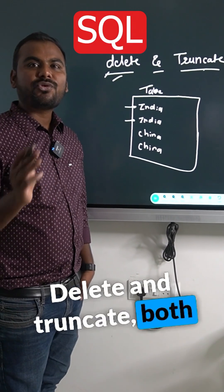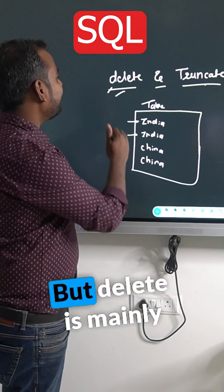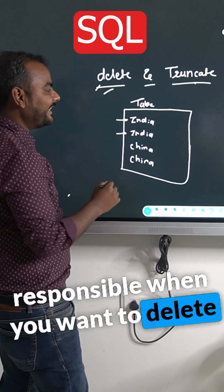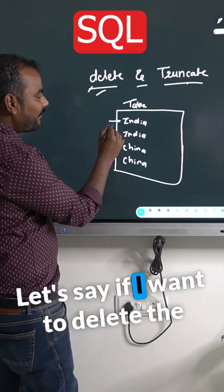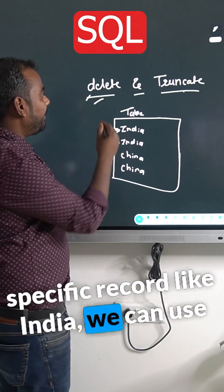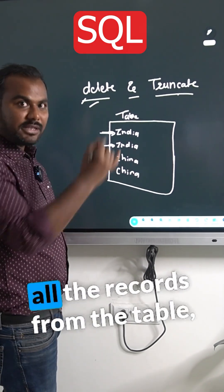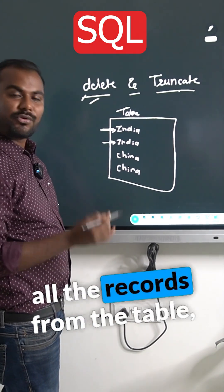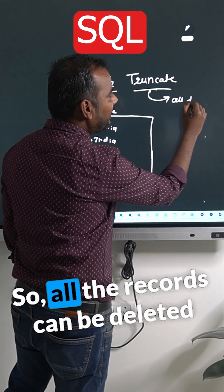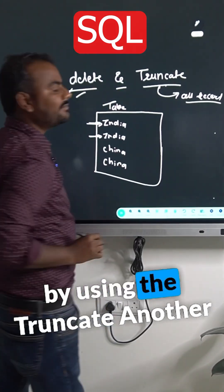Delete and truncate both are responsible to delete the record from the table, but delete is mainly responsible when you want to delete a specific record. For example, if I want to delete a specific record like India, we can use the delete command. But when you want to delete all the records from the table, we will go with truncate, so all the records can be deleted using truncate.